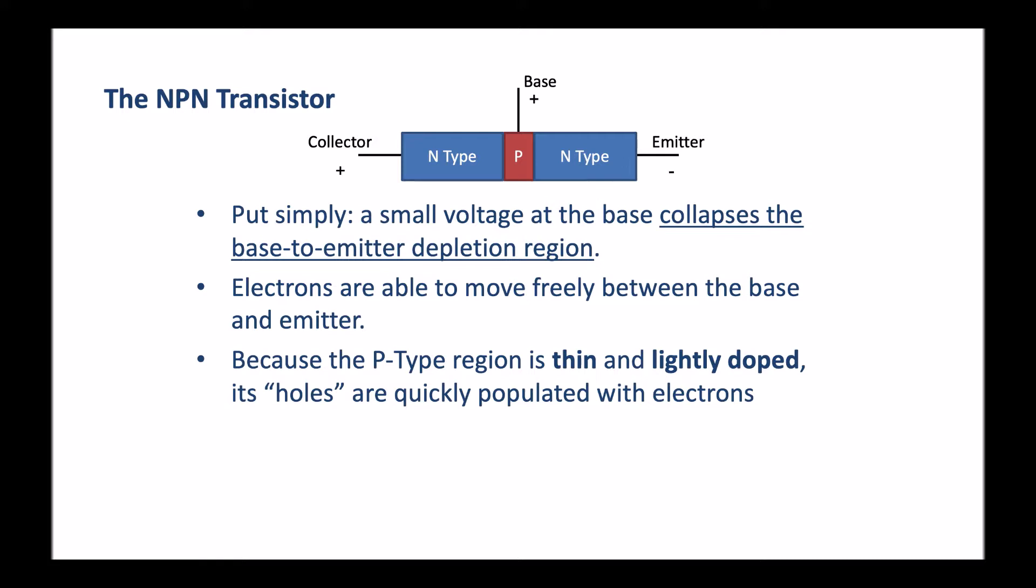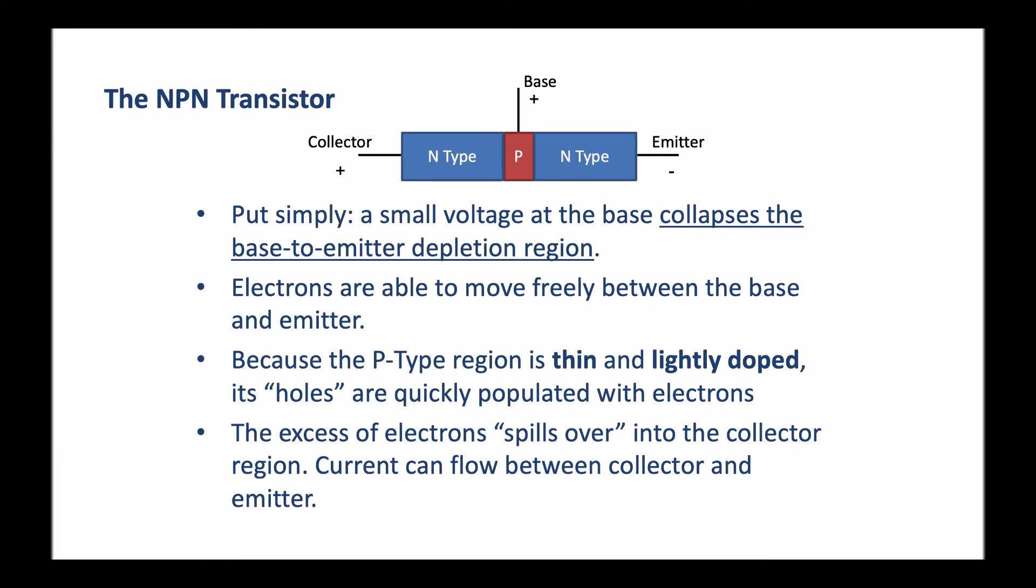Because the P-type region is very thin and lightly doped compared to the N-type regions, its holes are quickly populated with electrons. We spoke about electrons and holes in our previous video, but because the P-type layer is so small, the holes in the P-type layer are soon filled and there's now an excess of electrons that overspill into the collector region. What we now have is an excess of electrons throughout the transistor, and current can flow between the collector and the emitter freely.